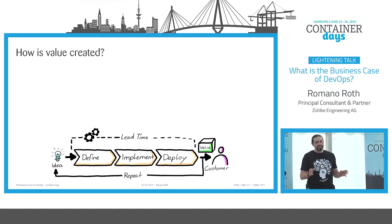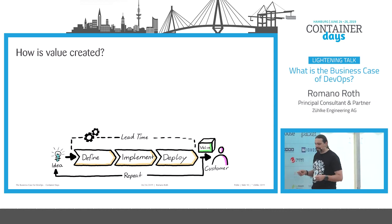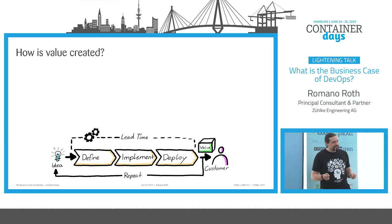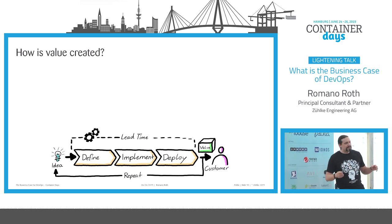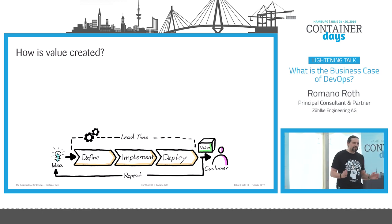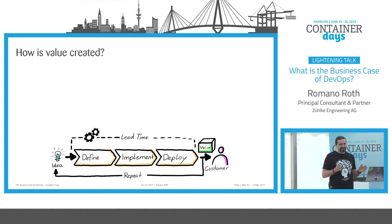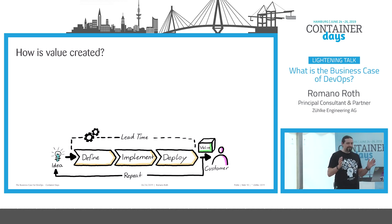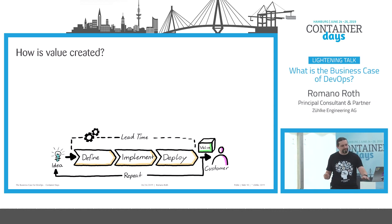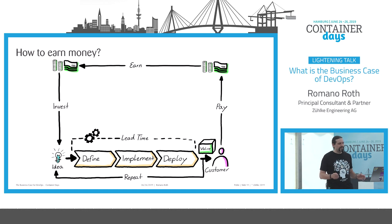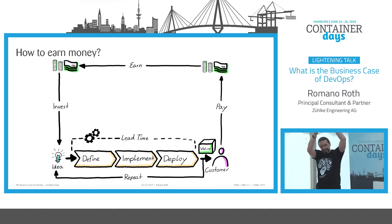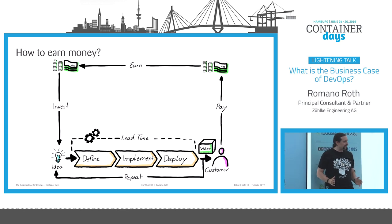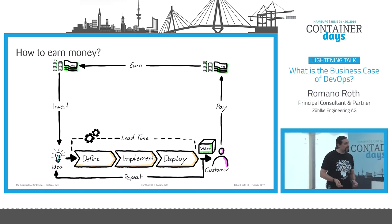It is crucial that we understand where value is generated. Usually we have a value chain which starts with an idea. Then we define this idea in a user story, implement it, and deploy it until it reaches the customer when we release the feature or product. During the whole value chain, no value is generated. Only when the feature or product is at the customer side is value generated. We earn money by having value at the customer side, because then the customer pays us, which we can reinvest into new ideas.